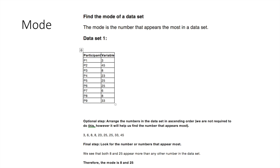The mode of a data set is the number that appears most often. Using the same data set, an optional step is to arrange the numbers in ascending order as we did for the median, then look for the number that appears most frequently. Therefore, the mode is 8 and 25, as both appear most often. Of the three measures, the mean is probably the most important — it tells us more about the data — and we will be calculating the average using the virtual hide data.